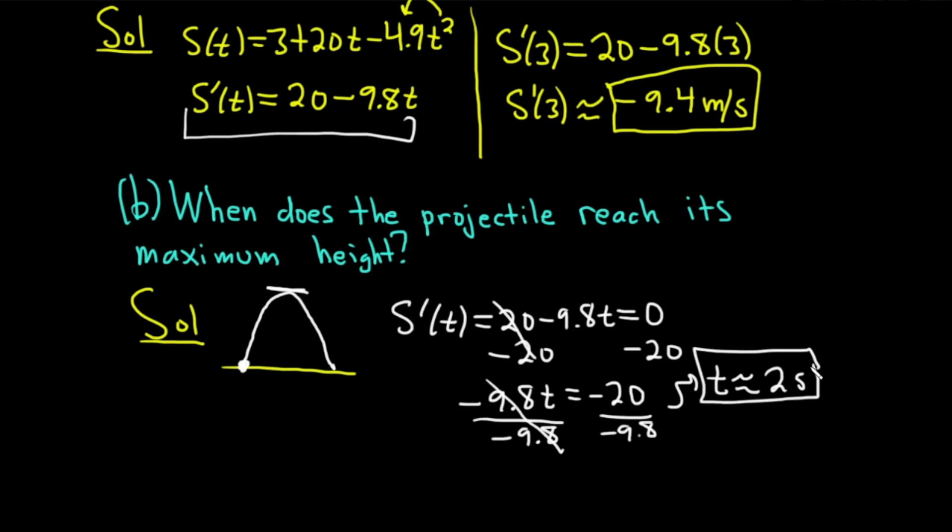So after about 2 seconds, this projectile will reach its maximum height, which makes sense because in the previous example, we know that after 3 seconds, it has a negative velocity. So it's already on its way down after 3 seconds. Let's do part c.